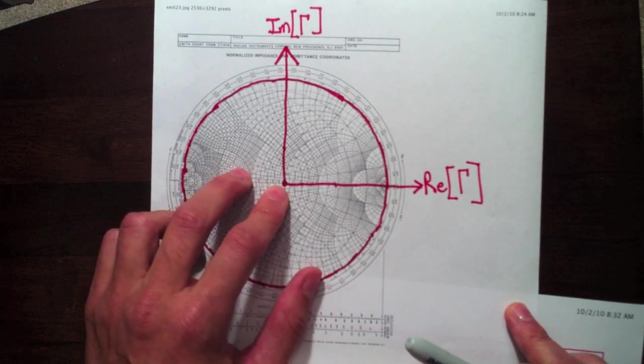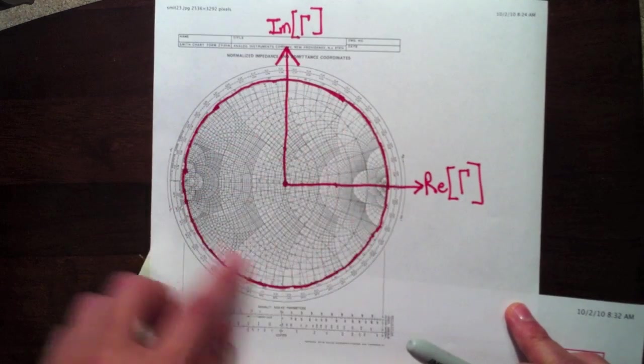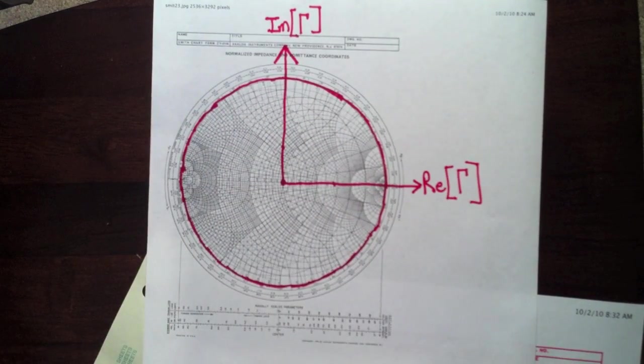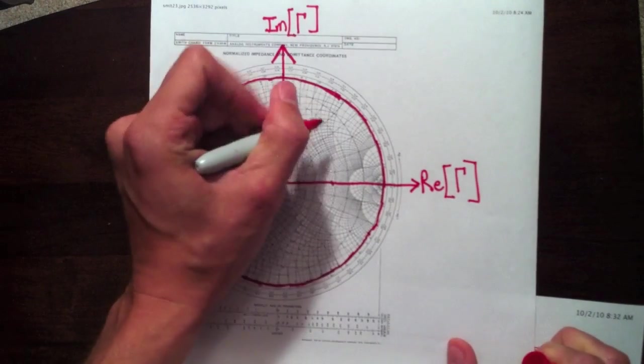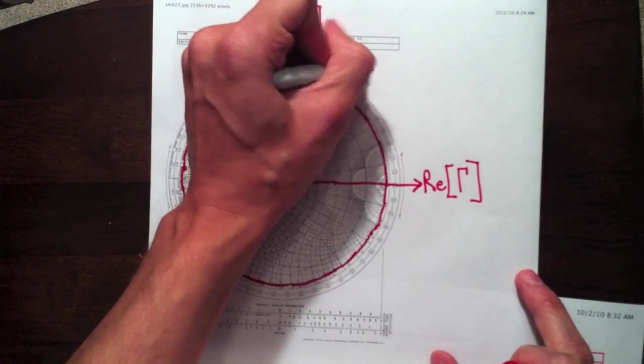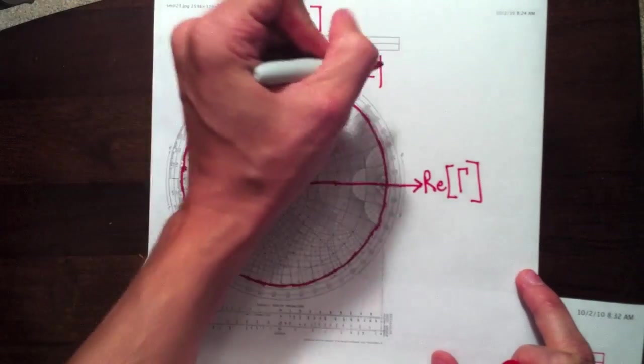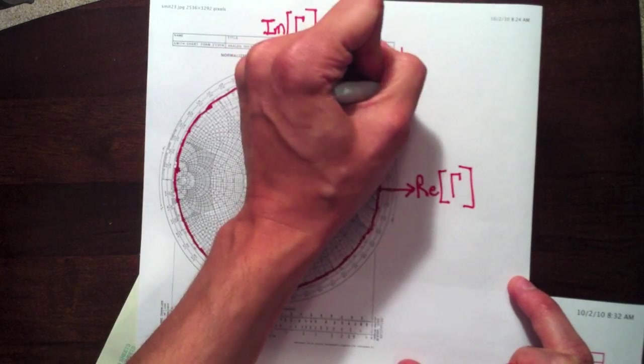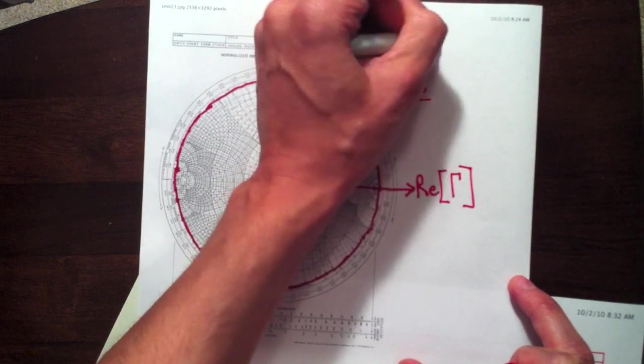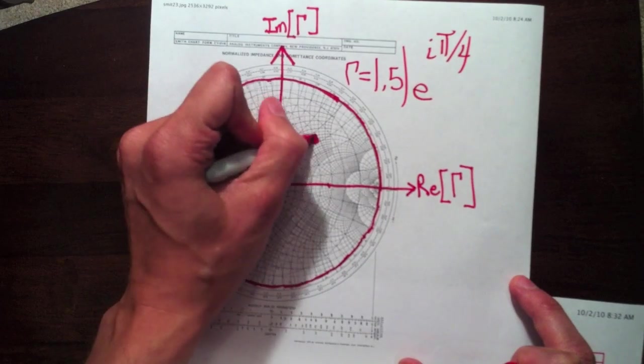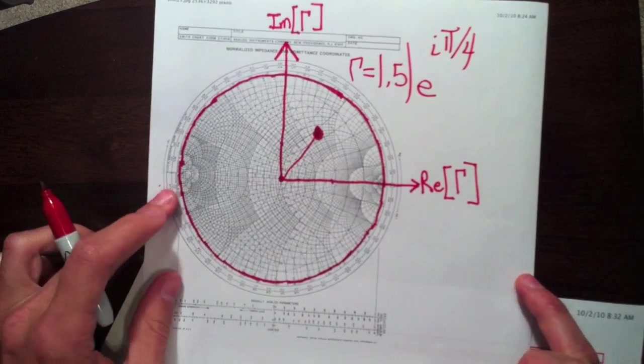This outer ring, gamma is one, so all power is reflected. And then any point in there, like for instance, this point right here, we can say gamma has a magnitude of, let's say, 0.5 with an angle of 45 degrees. It would be e to the i pi over four. So that is what gamma is corresponding to a point on the Smith chart right there.